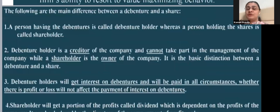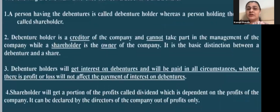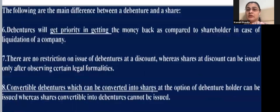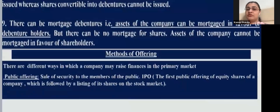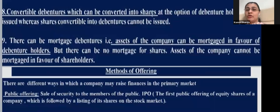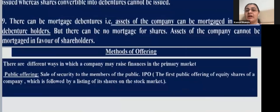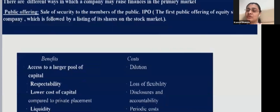Methods of public offering include the Initial Public Offering (IPO), which is the first public offering of equity shares of a company, followed by listing of its shares on the stock exchange. Benefits of an IPO include access to a larger pool of capital, increased respectability, lower cost of capital compared to private placements, and liquidity.